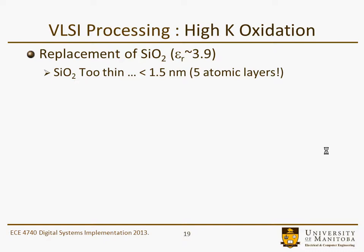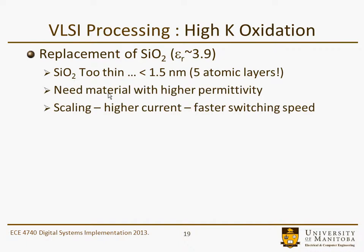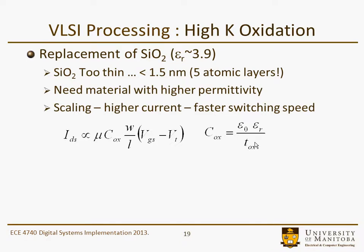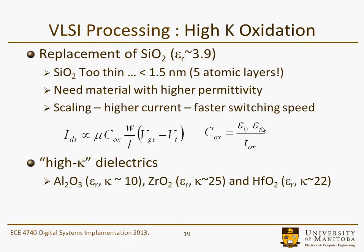More recently in VLSI processing, silicon dioxide is being replaced by what is considered a high-K oxide. The replacement of SiO2 is required because it's getting too thin, and as a consequence new materials are needed with higher permittivity. That is a direct result of our scaling arguments, where we have our MOSFET current, a relationship between oxide thickness, relative permittivity, and SiO2. We want drive to increase and we'd like tox to go down, but we can no longer reduce tox, so we want to push the relative permittivity up.